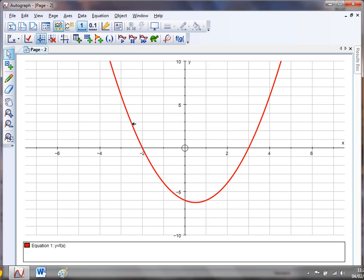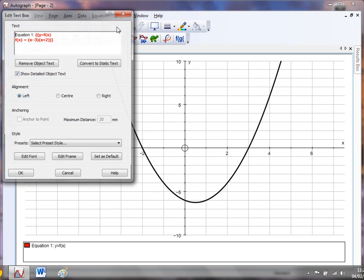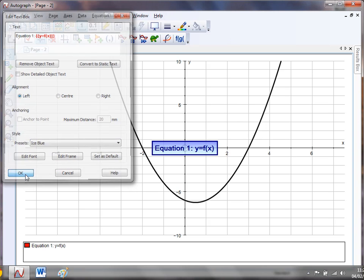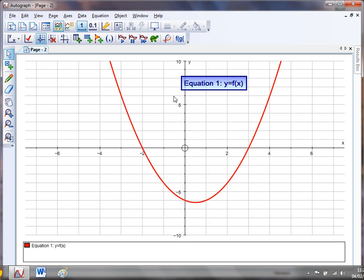Now I can label that if I want with a text box. So give that a little click, text box that, and I'm going to just remove, oh get rid of this show detailed object text, and just leave it as y equals f of x, and a bit of ice blue there it goes.